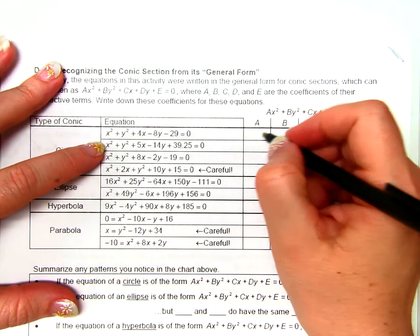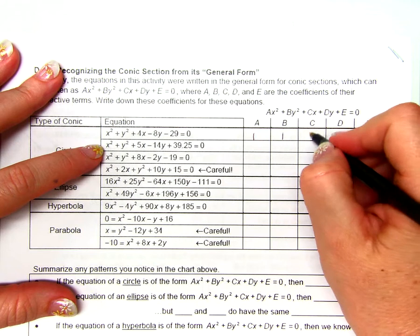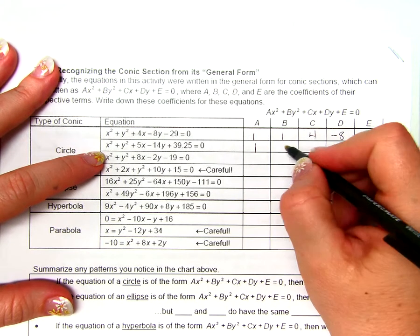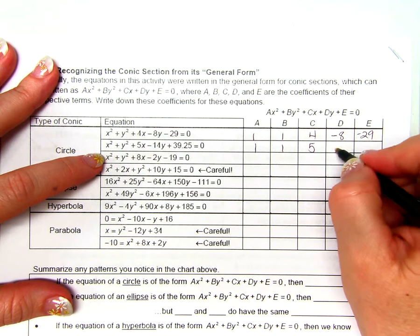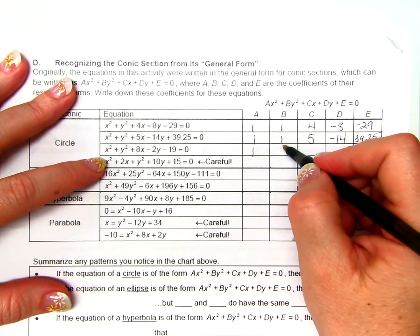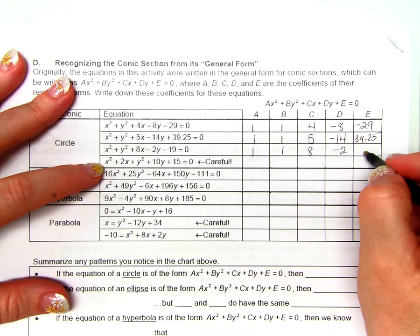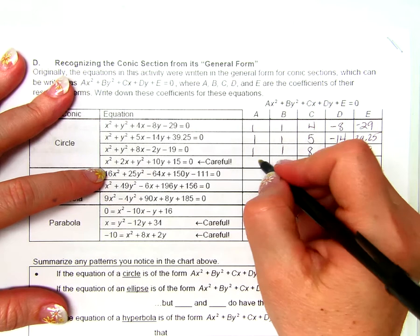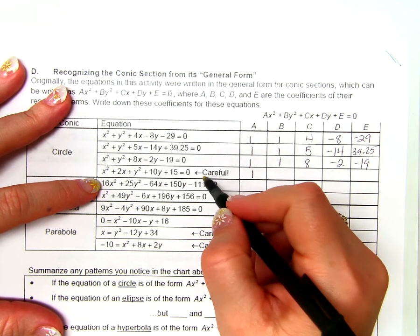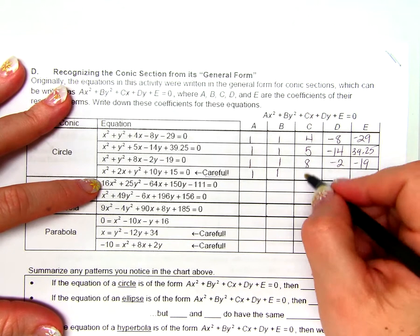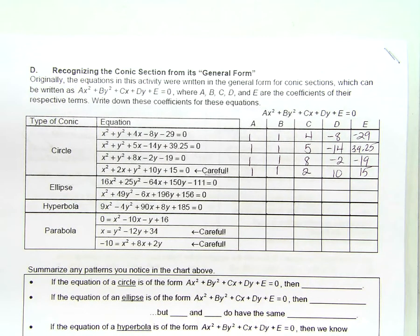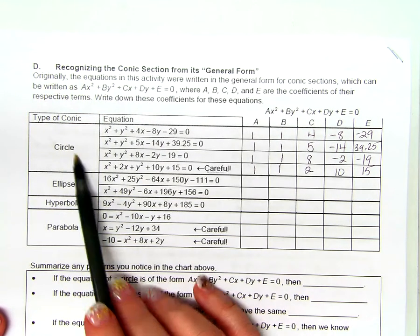This right here is standard form. This is standard form of a conic. Which is what again? What's a conic? Intersection between a plane and a cone. Say it with me. Intersection of a plane and a cone. So, if I'm looking at this first equation right here, anything that's in front of the x squared is the a. Whatever's in front of the y squared is the b. Whatever's in front of the x is the c. Whatever's in front of the y is the d. And the constant is e. So, tell me, from this first equation, what is a? What's b? C. 4. D. Negative 8. And e? Negative 29.